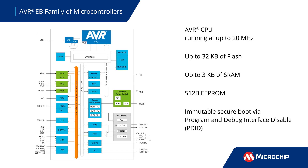Available in packages ranging from 14 to 32 pins, the AVR-EB family features a 20 MHz AVR CPU core and a variety of hardware peripherals. The onboard 6-channel event system enables autonomous operation and inter-peripheral communications without intervention from the CPU.